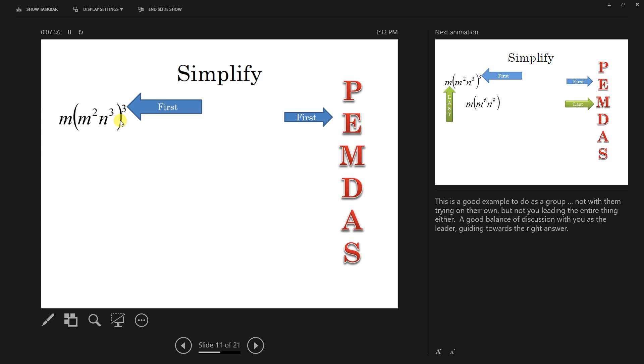While there are parentheses here, there's not an operation in them that we can do. So we skip over the parentheses and we take care of the exponents because we can do three groups of two and three groups of three. And then the last thing we will do is multiply.